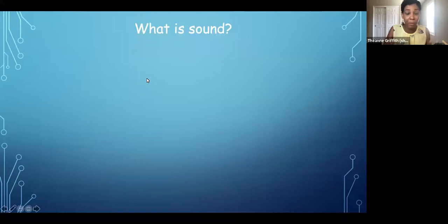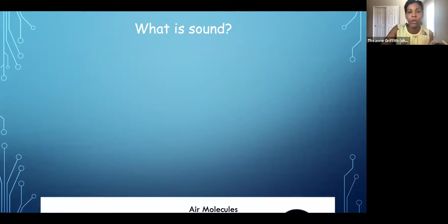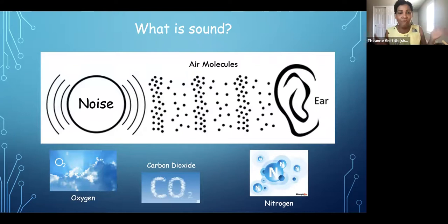But before we make the model eardrum, I want to talk a little bit about what is sound. Sometimes we might think of sound as being something invisible that's just there that our ears pick up. But sound is actually something physical. When I make a noise, like let's say clapping my hands, what that does is it sends vibrations through the air. And those vibrations start to send our air molecules just crashing into one another, crashing, crashing, crashing. And they pass those vibrations to our eardrum where our eardrum begins to vibrate.